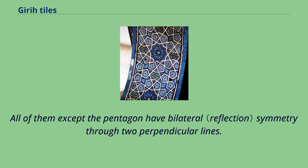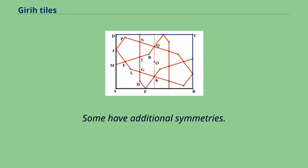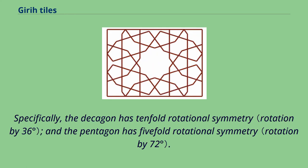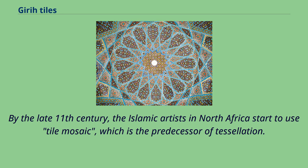All of them except the pentagon have bilateral symmetry through two perpendicular lines. Some have additional symmetries—specifically, the decagon has tenfold rotational symmetry and the pentagon has fivefold rotational symmetry.